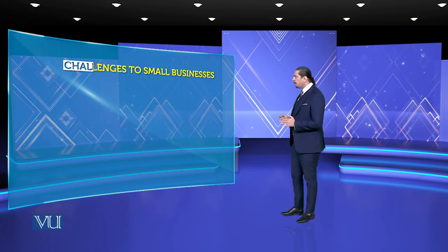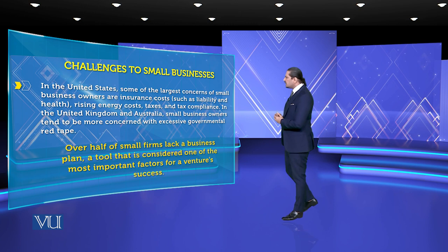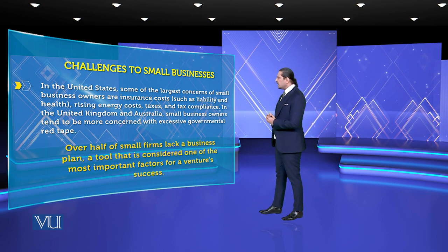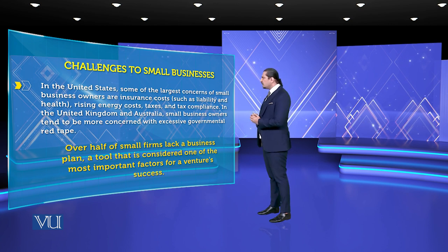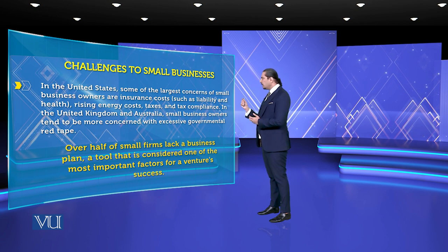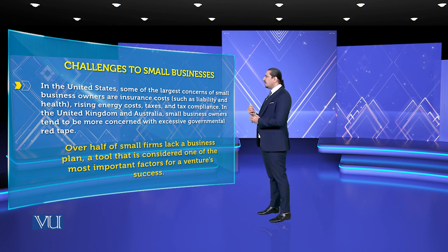In the United States, some of the largest concerns of small business owners are insurance costs — both liability and health — rising energy costs, taxes, and tax compliance. In the United Kingdom and Australia, small business owners tend to be more concerned with excessive governmental red tapism.